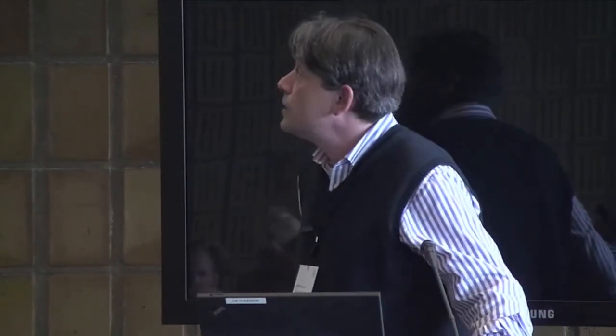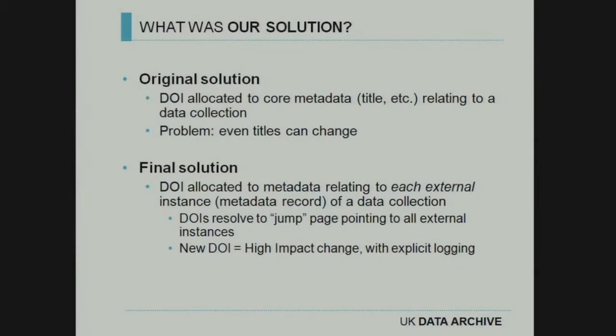That's the methodology. Last year we started working with the British Library and DataCite to try and allocate digital object identifiers to our 6,000-odd collections. In discussion with DataCite and the British Library, we came to the opinion that it would be better to allocate the identifier to core metadata — though even the titles of some of our studies change. Adding a new wave to a longitudinal survey means there's a new title, so that's not persistent enough. So we worked on the basis of allocating a DOI to the metadata which relates to each external instance of the data collection, and the digital object identifiers resolve to a jump page which points to all of the external instances.